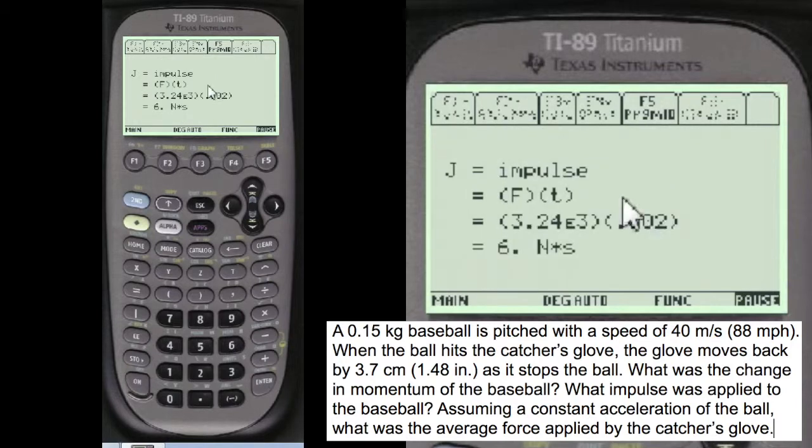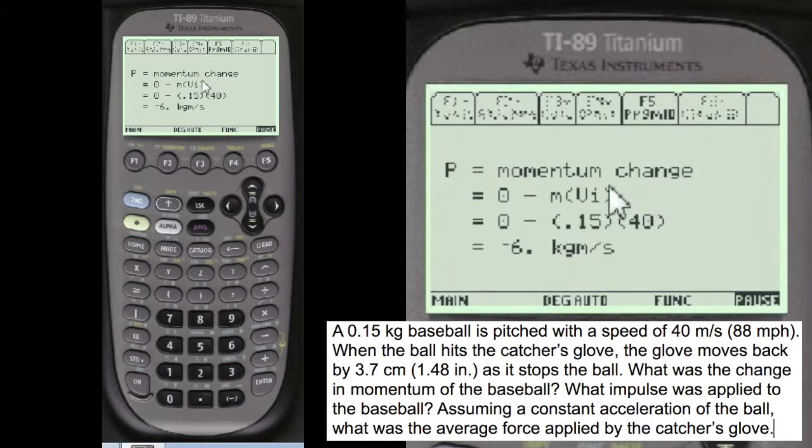And J equals impulse. I always like to give you definitions of what I'm talking about in my program. It's very clear. No ambiguity. And so the impulse is 6 Newton times seconds. And the momentum change is minus 6 kilogram meters per second.